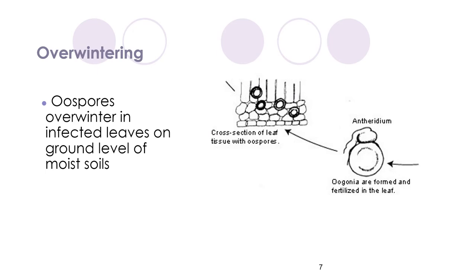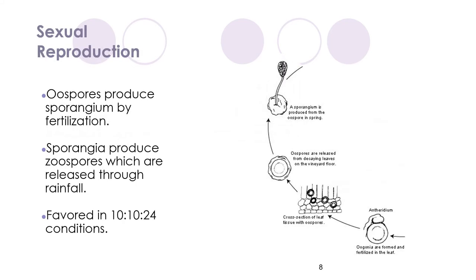To begin, fertilized oospores are overwintered in infected leaves on the ground level, and they can exist either in the tissue of infected leaves or other debris, or in the top level of moist soils. After winter, the fertilized oospores produce sporangia. These sporangia themselves produce zoospores, and these zoospores produce the primary infection for the season. Morphologically, the zoospores have two flagella that aid in their movement in water, and these zoospores are released from the sporangia through rainfall.